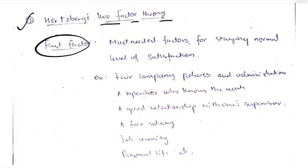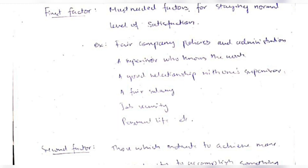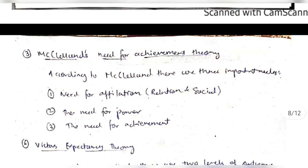The second theory is Herzberg's Two-Factor Theory. The first factor covers the basic things needed to maintain a normal level of satisfaction: fair company policies, a good supervisor-employee relationship, a fair salary, job security, and personal life considerations. The second factor is about motivating people to do more — through opportunities to accomplish something significant, recognition for achievements, and chances for advancement.